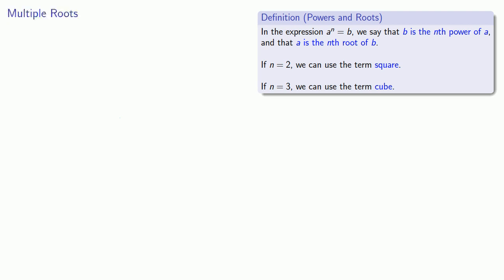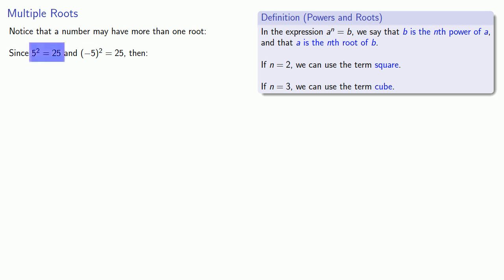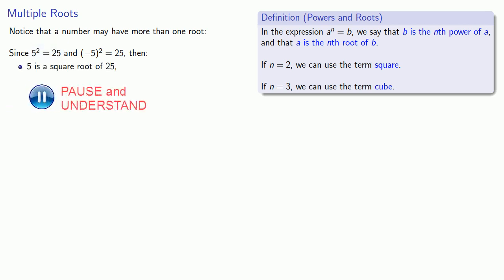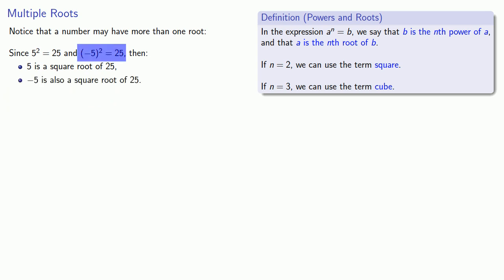It's important to notice that a number may have more than one root. Since 5 to power 2 equals 25, and negative 5 to power 2 also equals 25, we can say that 5 is a square root of 25. But the second equation tells us that negative 5 is also a square root of 25.